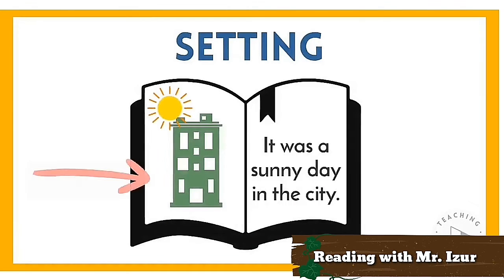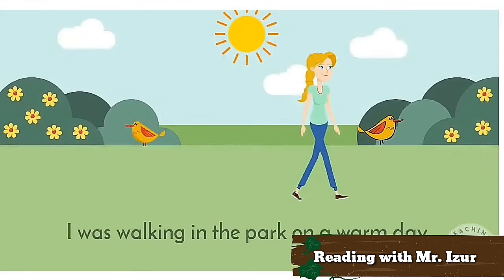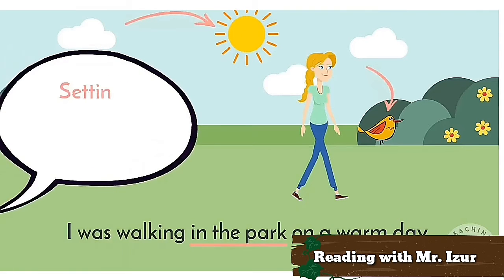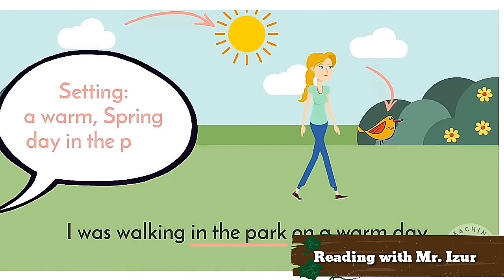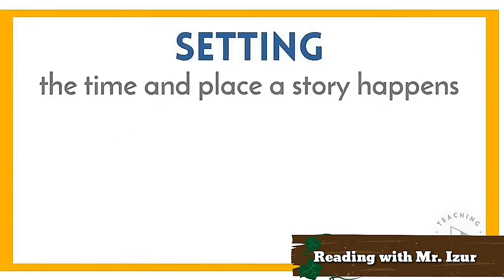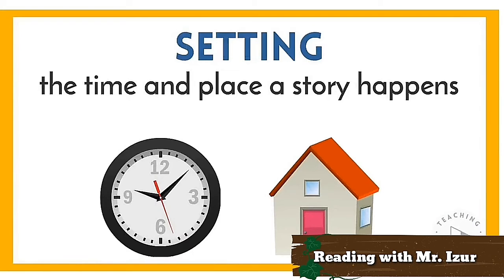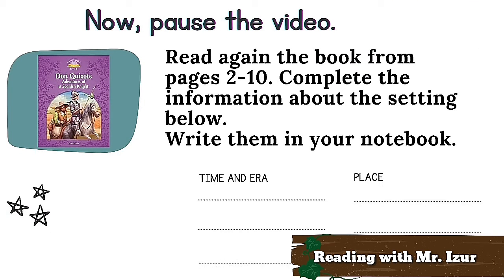You can determine the setting of a story by looking at the illustrations and finding information in the text. Let's try it: 'I was walking in the park on a warm day.' The text tells you you're in a park, it's warm, and it's daytime. The illustration shows flowers, birds, and the sun — it might be spring. So we could describe the setting as a warm spring day in the park. Remember, setting is the time and place a story happens.